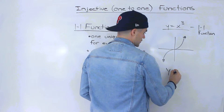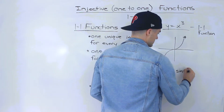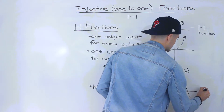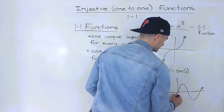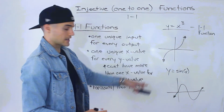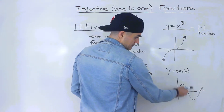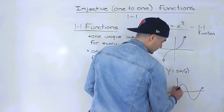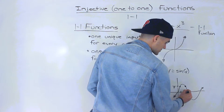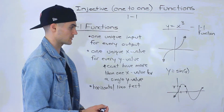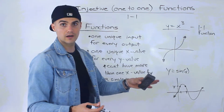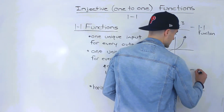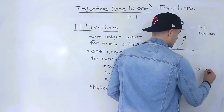What about a trig function like y = sin(x)? Sine x is a wave that continues forever. It is not a one-to-one function — it fails the horizontal line test because for a single y-value there are two x-values. So y = sin(x), y = cos(x), or any transformation of those two trig functions is not a one-to-one function.